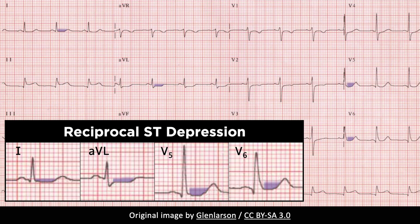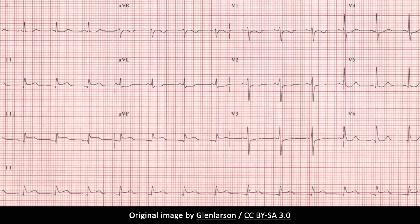Reciprocal changes can involve ST segment depression in the frontal leads 1 and AVL, and sometimes the lateral precordial leads too, V5 and V6. Depression of the ST segment in leads V1 to V4, however, can indicate concomitant right ventricular infarction. Analysis of right precordial leads is recommended in patients with an inferior wall infarction because of the common co-involvement of the right ventricle.